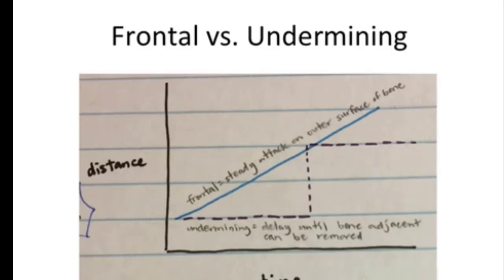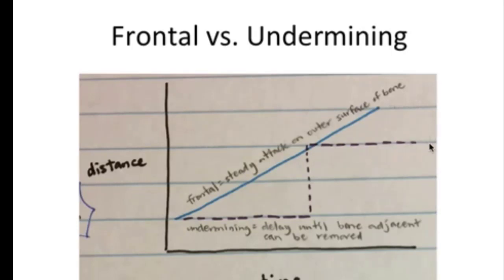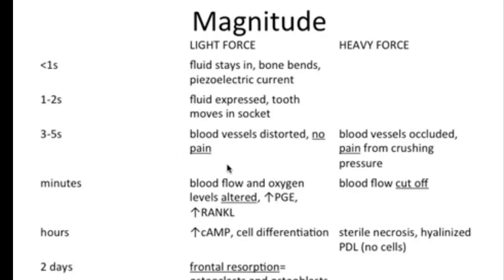Here's a small graph looking at frontal versus undermining resorption. The x-axis is period of time and the y-axis is distance of tooth movement. Frontal resorption is slow but steady — a steady attack on the outer surface of bone. Undermining resorption has a delay until the entire bone adjacent to the tooth is removed, then the tooth jumps forward. Then we should wait at least two weeks for the PDL to repair before reactivating for another round of undermining resorption. Frontal resorption with light force is ideal, but heavy force is acceptable as long as it decays to zero after undermining resorption ends and there's time for PDL repair before a new wire is placed.